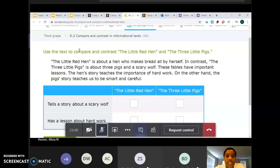Okay, next one. Use the text to compare and contrast the story The Little Red Hen and The Three Little Pigs. The Little Red Hen is about a hen who makes bread all by herself. In contrast, The Three Little Pigs is about three pigs and a scary wolf. These fables have important lessons. The hen story teaches the importance of hard work. On the other hand, the pig's story teaches us to be smart and careful. I saw a lot of cool words in this short text here. Okay, again, put the wave emoji. Tells a story about a scary wolf. Is that The Little Red Hen or The Three Little Pigs?